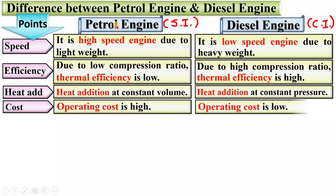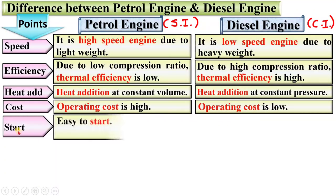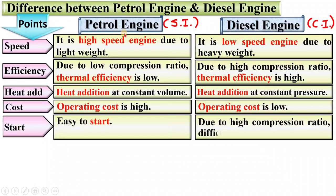Next, operating cost is high in case of petrol engine, whereas in case of diesel engine operating cost is low. Petrol engine is easy to start, whereas in case of diesel engine, due to the high compression ratio, it is a little bit difficult to start.